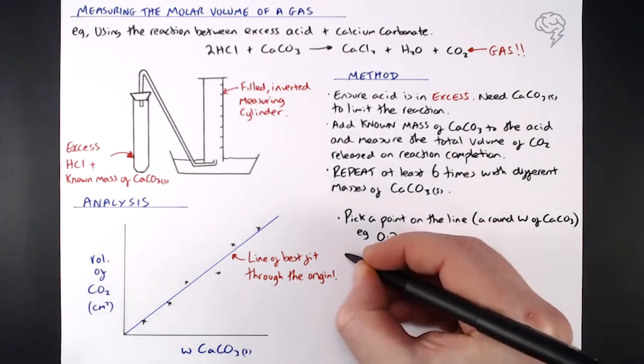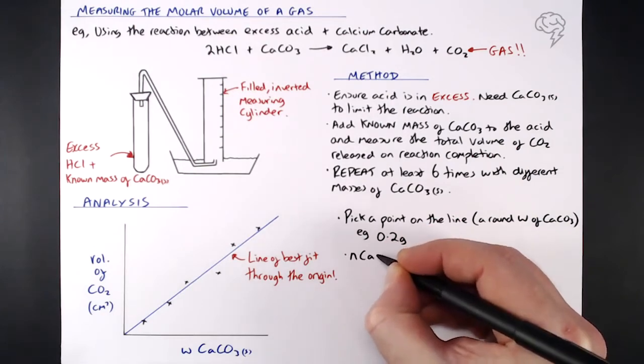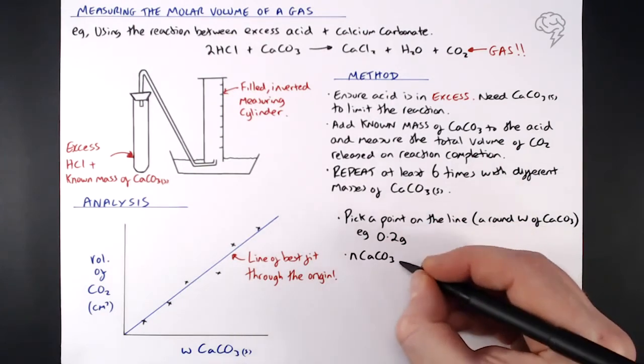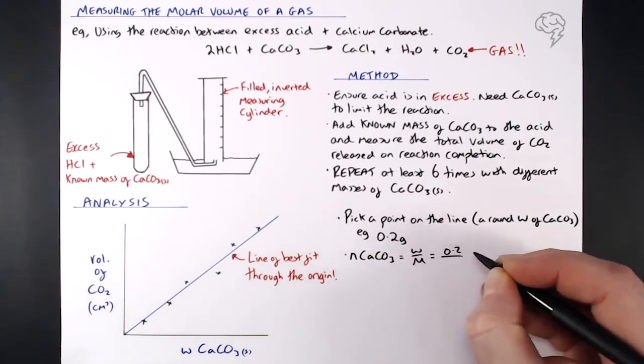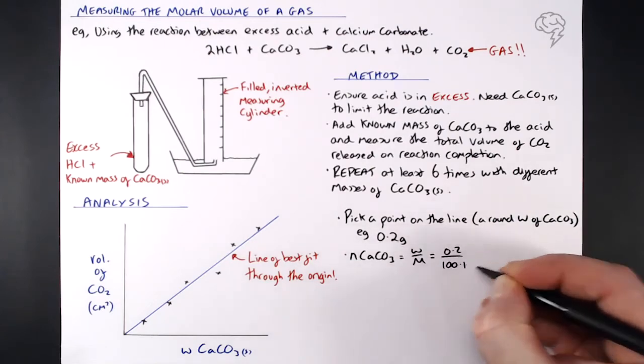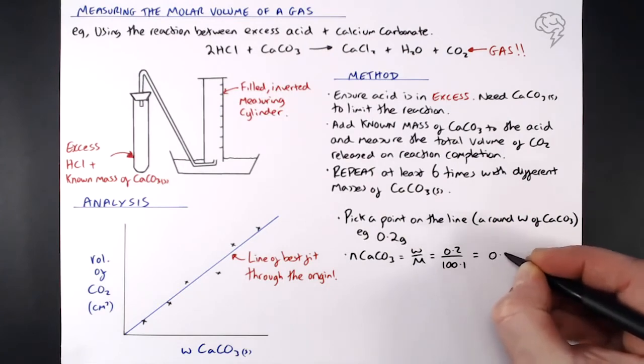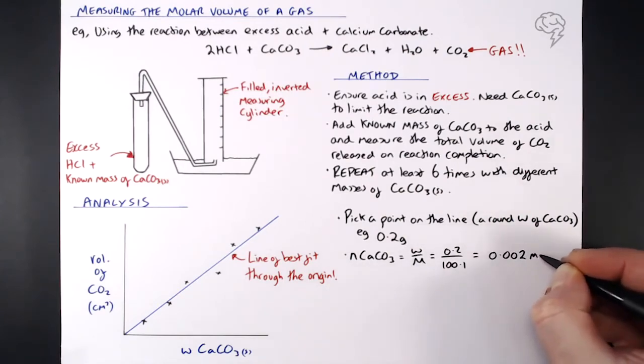Next step, we find the number of moles of calcium carbonate in that mass that you've chosen. It's going to be anywhere on that straight line. So I'm using 0.2 grams. Number of moles of calcium carbonate is 0.2 divided by molar mass, which is 100.1, and that gives us 0.002 moles.